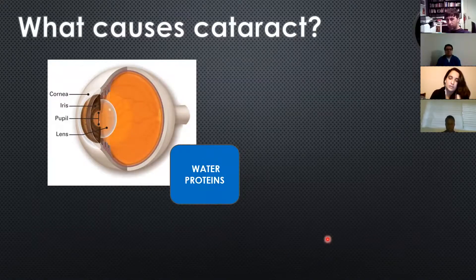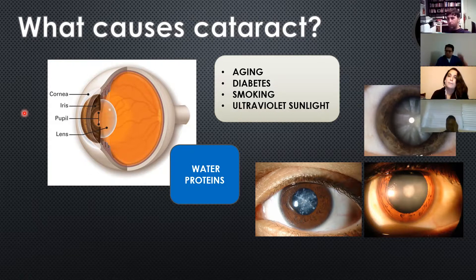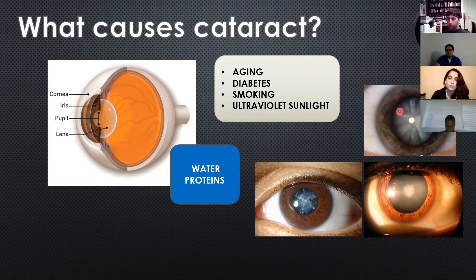Normally the lens, as you can see, is made by water and proteins and is completely clear and transparent. To be transparent, the water and proteins have to be in certain parts of this structure. But when you start aging, or you have diabetes, or you smoke, or you have a lot of exposure to ultraviolet sunlight, these proteins start to clot in our lens. As you can see in the picture, there are a lot of kinds of cataracts that can be formed — that's why cataracts form.